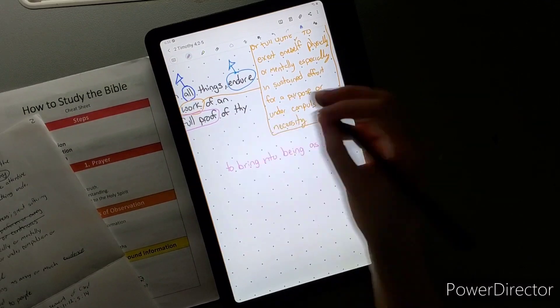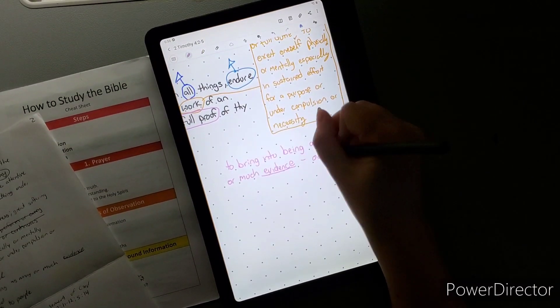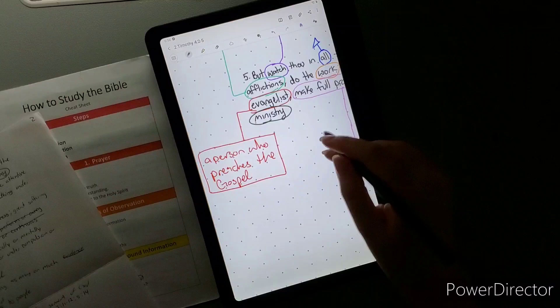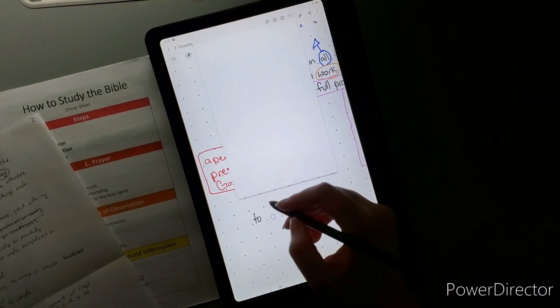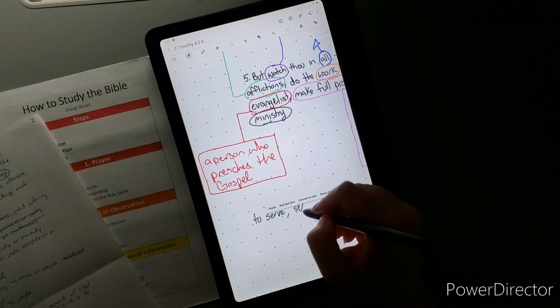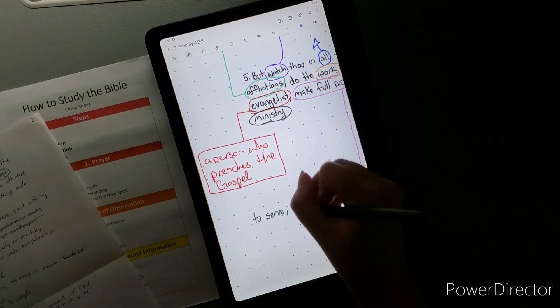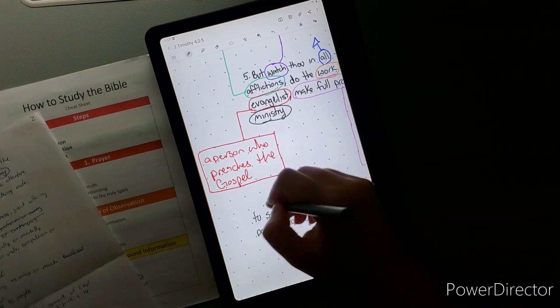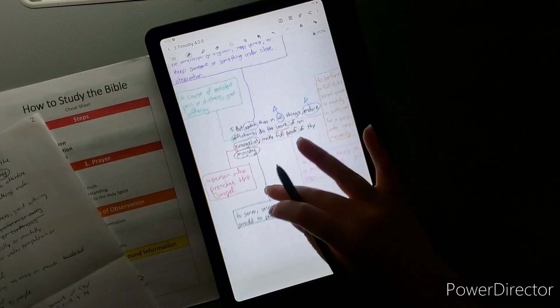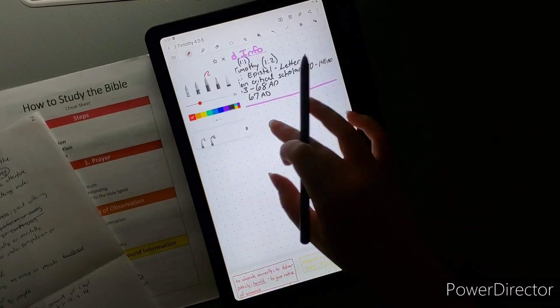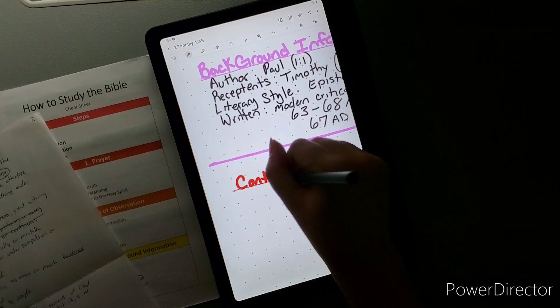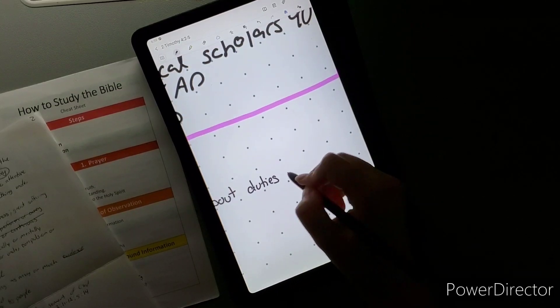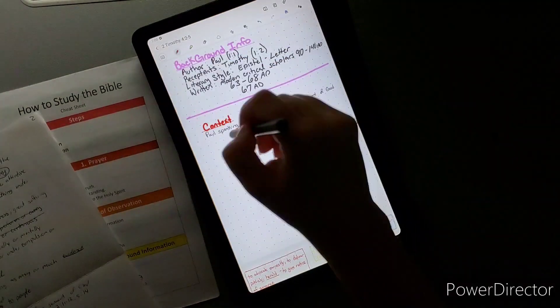We're going to jump into the next steps. That's observation, getting the definitions. We did the background and defining words. The next thing is to get context. Context here is that Paul is speaking to Timothy about the duties of a servant of God. As a servant of God, I can take from this and learn from this. This is things that I should be doing and that should be a part of me as well. We have some cross references. I can't go through every single cross reference, we would be here forever. This video is already long.